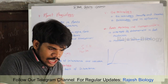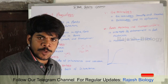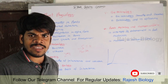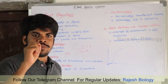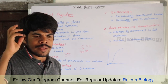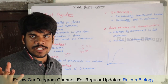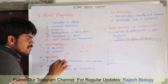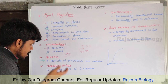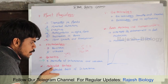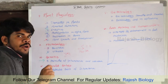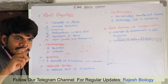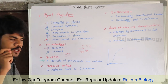Molecular basis of inheritance covers transcription, translation, translocation, and transduction — involving mRNA, tRNA, and ribosomes at the molecular level. In principles of inheritance and variation we deal with chromosomes, but in molecular basis we deal with the genetic code at a very deep molecular level — like pyrimidines and purines, and nitrogen base pairs.